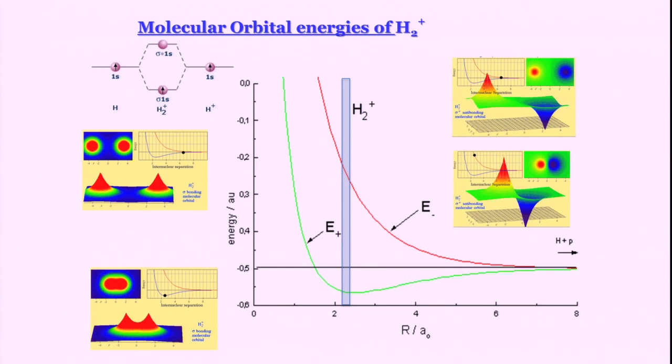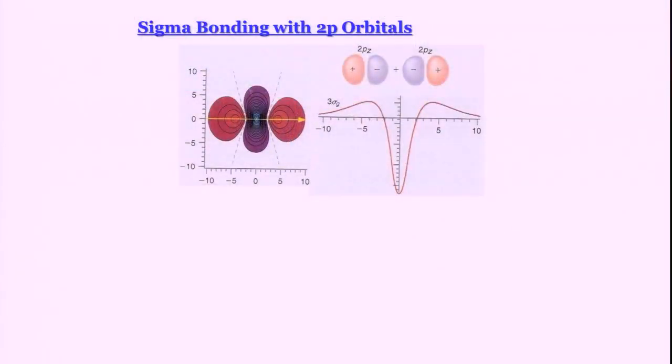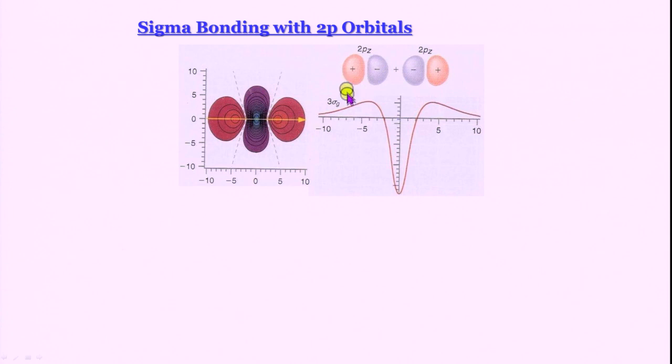We now have the framework for homonuclear diatomics. To treat molecules like C_2, N_2, O_2 and so on, we invoke linear combinations not only of 1s orbitals but also 2s and 2p orbitals, generating bonding and anti-bonding molecular orbitals in the same way. The procedure is exactly the same; we just fill in electrons according to the number available.